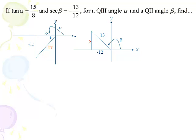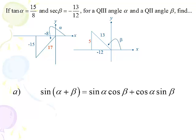Alpha is in quadrant 3 and the tangent is 15 eighths, so I marked that negative 15 and negative 8, and the hypotenuse is 17. Beta is a quadrant 2 angle whose secant is negative 13 twelfths, therefore its cosine is negative 12 thirteenths, and that makes the third side 5. If you take the time to draw the triangles in the correct quadrant and label them properly, the rest of this is rather easy.